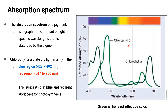From the absorption spectrum, chlorophyll A and chlorophyll B absorb light mainly in the blue region and the red region. The blue region ranges from 422 to 492 nanometers, and the red region ranges from 647 to 760 nanometers. The high absorption of light in these regions suggests that blue and red light work best for photosynthesis.